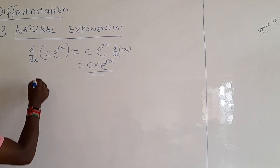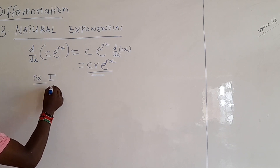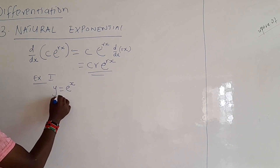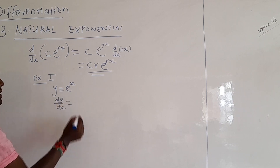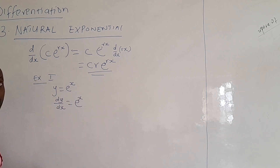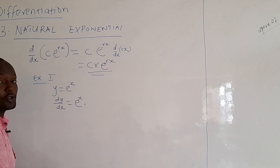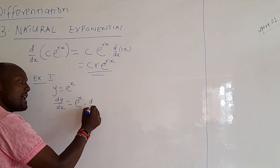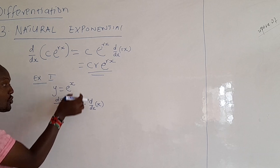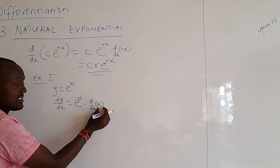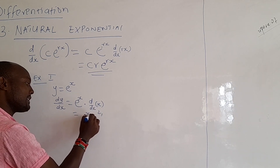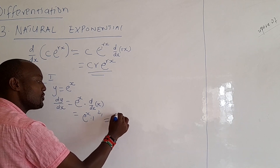Maybe we can take an example. You are given y equals exponential to power x. How do you differentiate that? Remember dy/dx will be equal to — it remains the way it is, our exponential will remain as e^x. Then we multiply by the derivative of the power. We differentiate x, and based on our first class of calculus, the derivative of x equals one. So you have e^x times one, which gives you e^x.